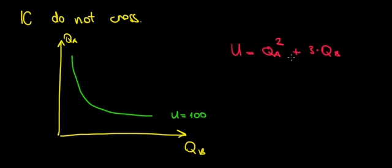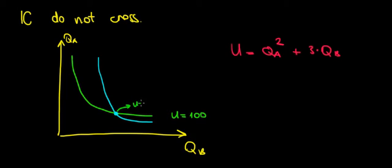Now let's suppose we actually cross an indifference curve — look what happens. Let's say it would look something like that. We can see that they cross at this point. Remember, this point belongs to the utility level of 100 because they cross, and the blue point also belongs to the utility of 100.